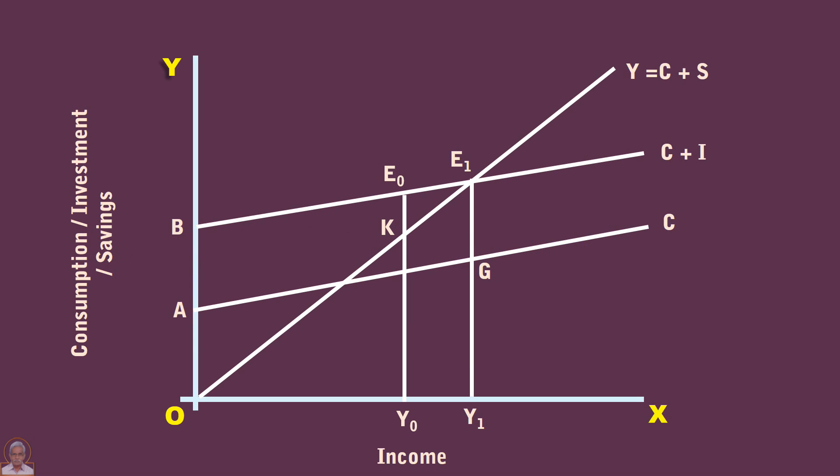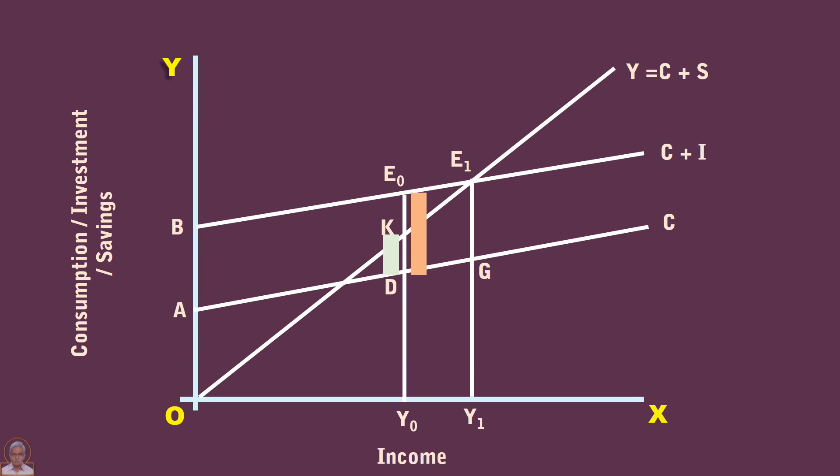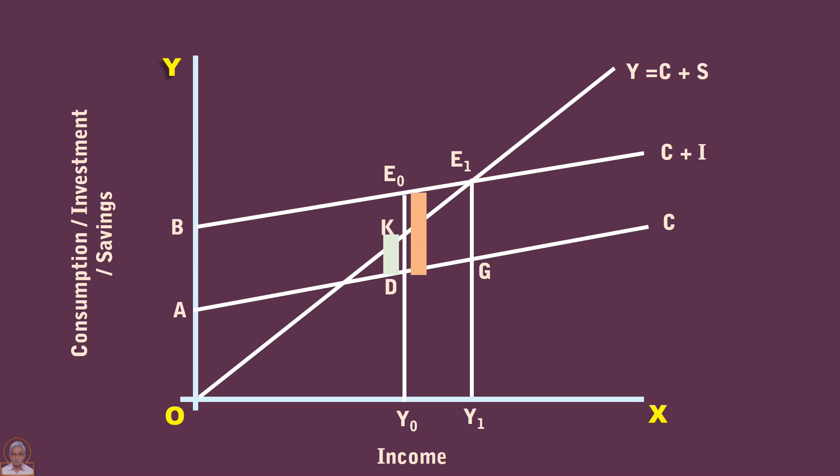Two: the planned savings is DK and planned investment is DE0. Investment is greater than savings. There is an excess demand condition in the economy.